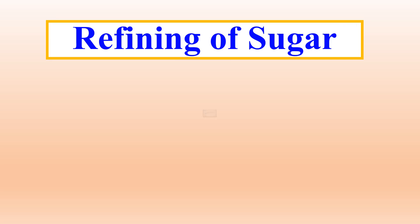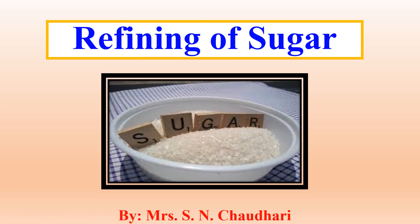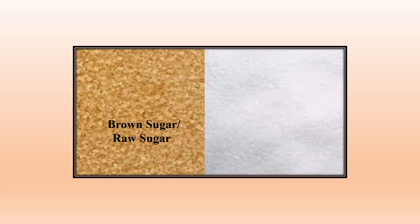After understanding the process of sugar manufacturing, let us try to understand the refining of sugar. Sugar obtained in the sugar manufacturing industry is generally brown or golden in color, which is also known as raw sugar. In order to obtain the white colored refined sugar, it is necessary to treat it with some additional processes.